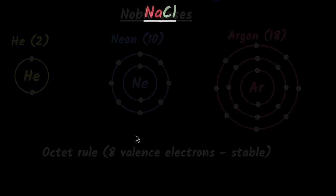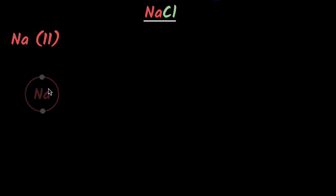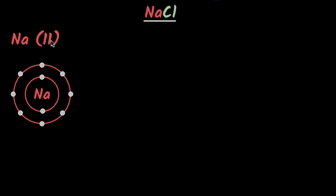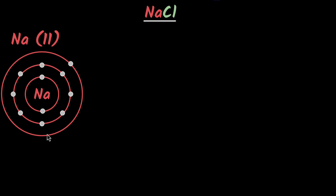Let's consider the formation of NaCl. Sodium has 11 electrons. The first two go in the first shell, the next eight in the second shell — so we have 10 now — and we have only one remaining. The second shell can only accommodate a maximum of eight, so where does the remaining one go? It has to go in the third shell.